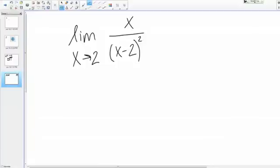Let's take a look at the limit as X goes to 2 of X over the quantity X minus 2 squared. So let's try to evaluate this limit together. To start out, let's just go ahead and plug in 2 and see what happens.